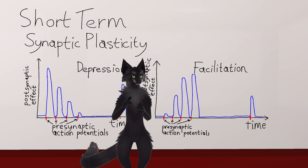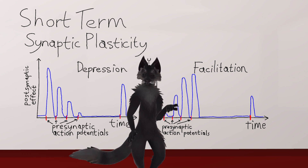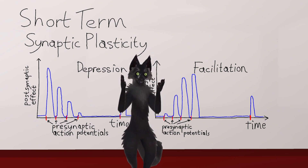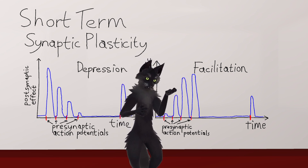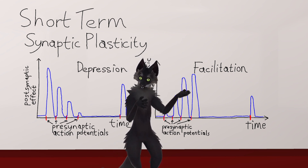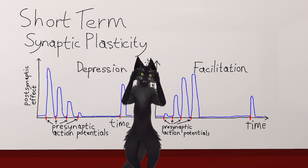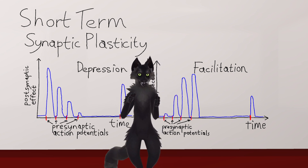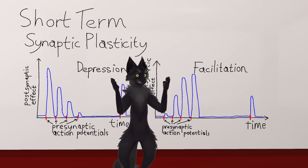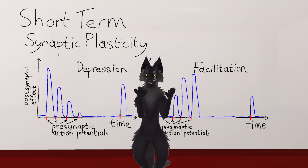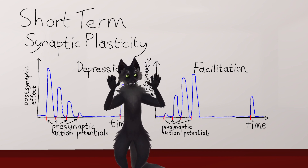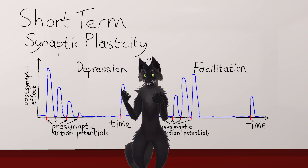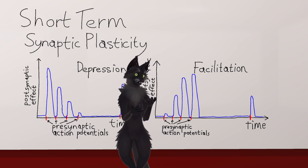Depression means that the synapse gets weaker, and facilitation means that the synapse gets stronger. These phenomena happen every time the synapse activates — every time the presynaptic neuron emits an action potential and transmits that electric impulse across to the postsynaptic dendrite. But this is a short-term change. It's temporary, and the effect fades away after a brief period of time, and the synapse returns to its original state. Short-term synaptic plasticity lets synapses analyze their recent activity, and they can do all sorts of interesting things using that capability.